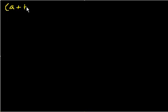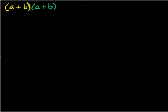So let's multiply (a + b) to the third power. That's (a + b) — I'm going to keep switching colors, and you're going to have to bear with me, but it should hopefully be fruitful — times (a + b), times (a + b), written in three different colors: yellow, green, and blue.